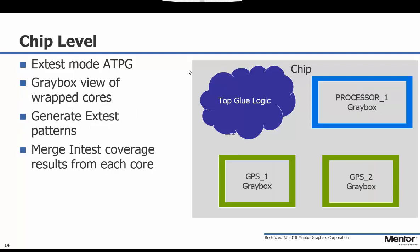In this demonstration we won't be working with the full netlist. Since we'll be generating X-test mode patterns, it will only be necessary to load the SOC level netlist along with the gray box netlists of the wrapped cores. I'll switch over now to a Linux window to show how to generate X-test patterns and then merge the in-test results from the wrapped cores into a single comprehensive test coverage number for the entire SOC.